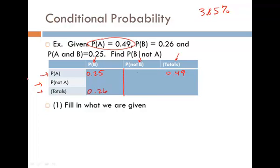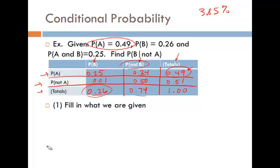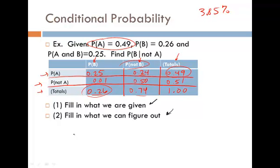Filling in the rest is almost like a Sudoku puzzle. We subtract to find the remaining cells: P(A and not B) = 49% − 25% = 24%; P(B and not A) = 26% − 25% = 1%. From the complement rule, P(not B) = 1 − 0.26 = 74% and P(not A) = 1 − 0.49 = 51%. The total is always 1. Subtracting gives P(not A and not B) = 50%, and everything checks out.